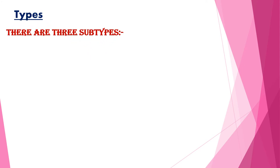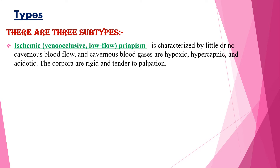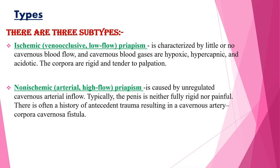When we look at the types of Priapism, there are three types. The first is ischemic, or veno-occlusive, or low-flow Priapism, which is characterized by little or no cavernous blood flow, and cavernous blood gases are hypoxic, hypercapnic, and acidotic, with the corpora rigid and tender to palpation. The second is non-ischemic, or arterial, or high-flow Priapism, caused by unregulated cavernous arterial inflow; typically the penis is neither fully rigid nor painful.